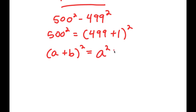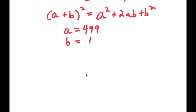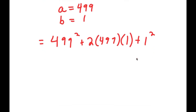If I have something in the form (a + b) squared, this is equal to a squared plus 2ab plus b squared. So in this case a is 499 and b equals 1, so this turns into 499 squared plus 2 times 499 times 1 plus 1 squared.